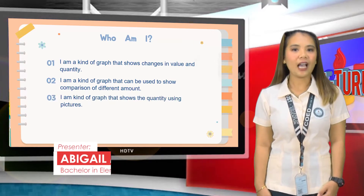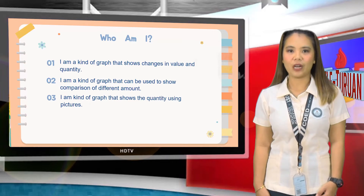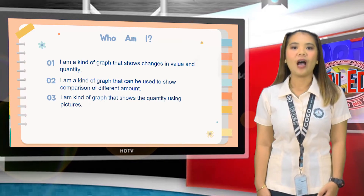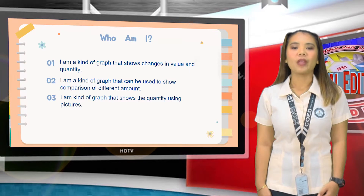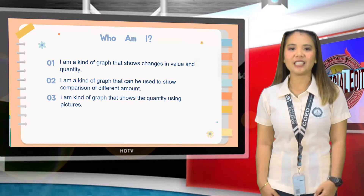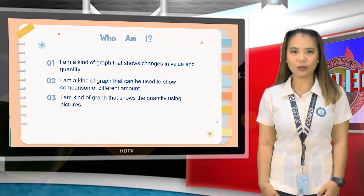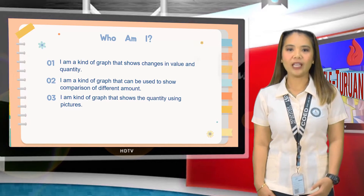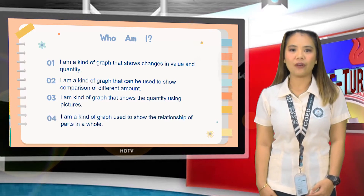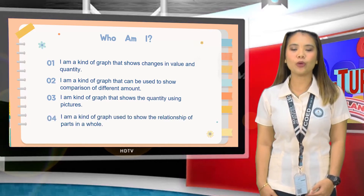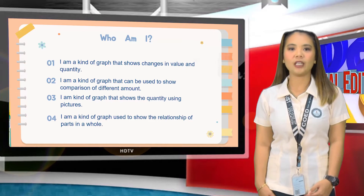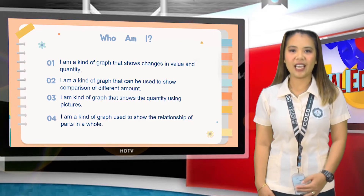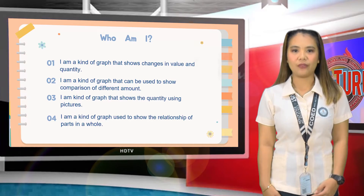Next: I am a kind of graph that shows the quantity using pictures. That is a pictograph. Last one: I am a kind of graph used to show the relationship of parts in a whole. Excellent! It is a pie graph.